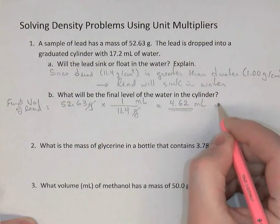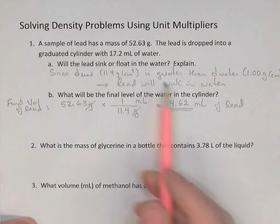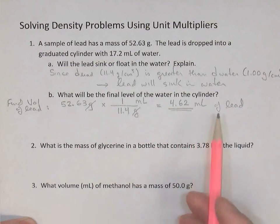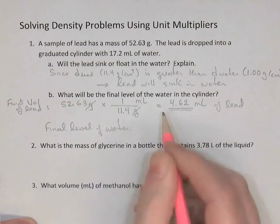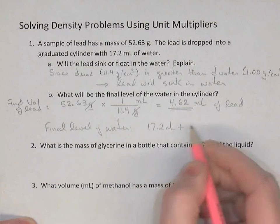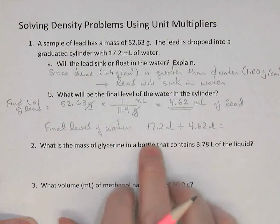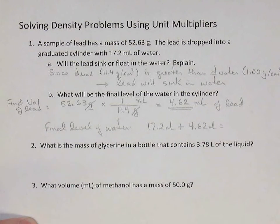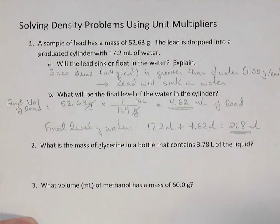So 52.63 grams divided by 11.4, keeping three significant digits — the density has three digits — gives us 4.62 milliliters. That's the volume of the lead. The question was what will be the final level of water in the cylinder. Since there was 17.2 mL of water and we dropped in this piece of lead of 4.62 mL and it sinks, the final level is 17.2 plus 4.62. Rounding by decimal places — one decimal and two decimals, keep one decimal — gives 21.8 milliliters.